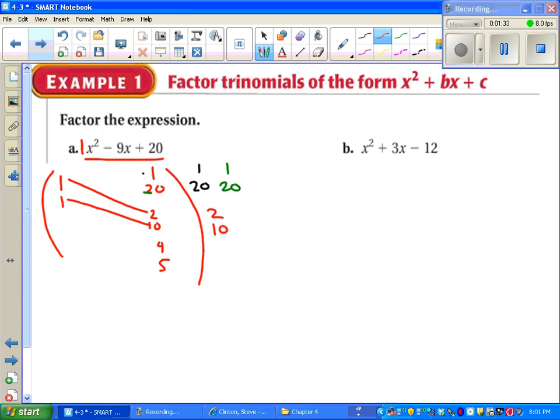Then I try again. 1 times 2 is 2, 1 times 10 is 10. Can't get 9 with that. So I switch it, but it's still going to give me 2 and 10 again. Moving along, I try 1 and 4. 1 times 5, and I see that I can get 9 with that. Except I need them both to be negative. So I make this a negative 4 and a negative 5. Then we write 1x times negative 4 and 1x times negative 5, and we've got our factors.